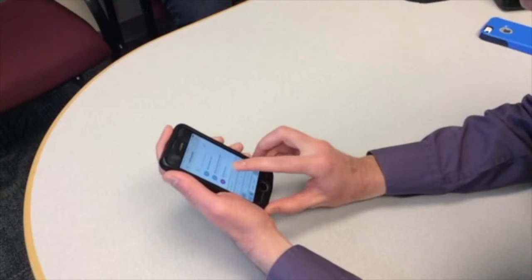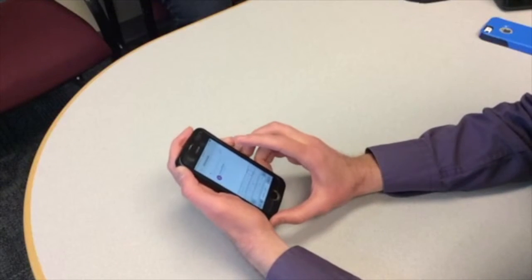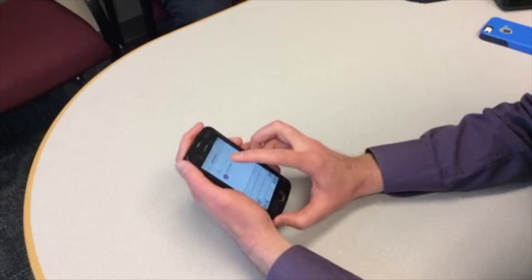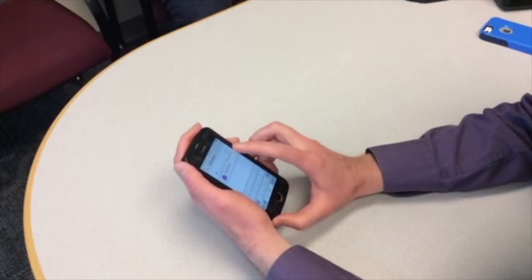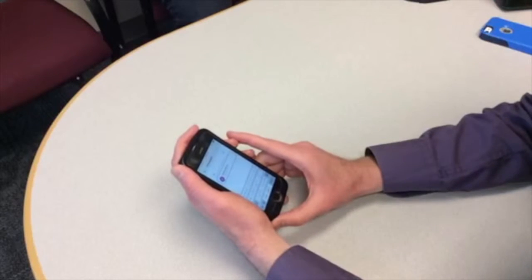I type Q, U, I. VoiceOver announces autocomplete with each letter. That should be enough. Now I'm going to do a single finger tap towards the upward middle of the screen. VoiceOver announces Quentin Williams, QuentinWattus.org. It found it right there.